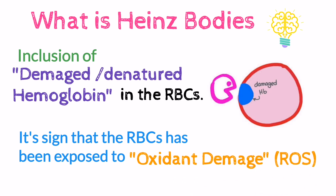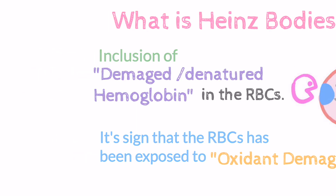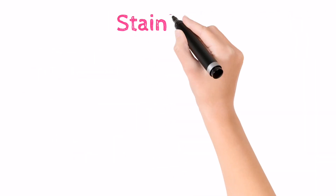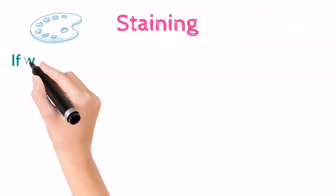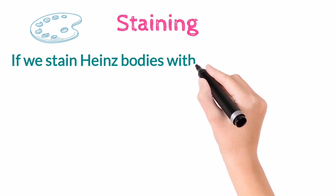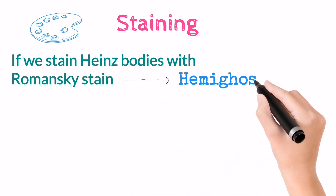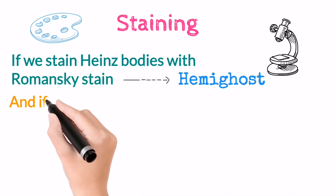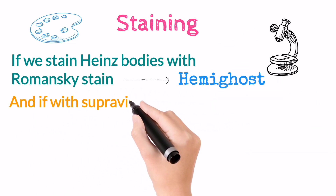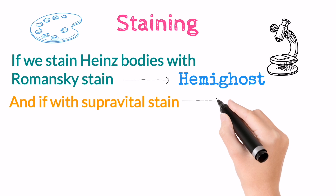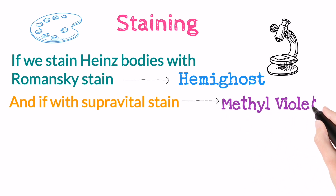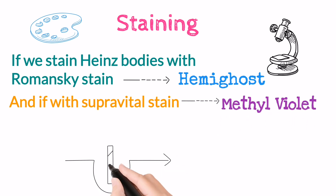If you stain Heinz bodies with a Romanowsky stain, they will appear as homogeneous under the microscope. But if stained with supravital stain, they will look methyl violet in color.